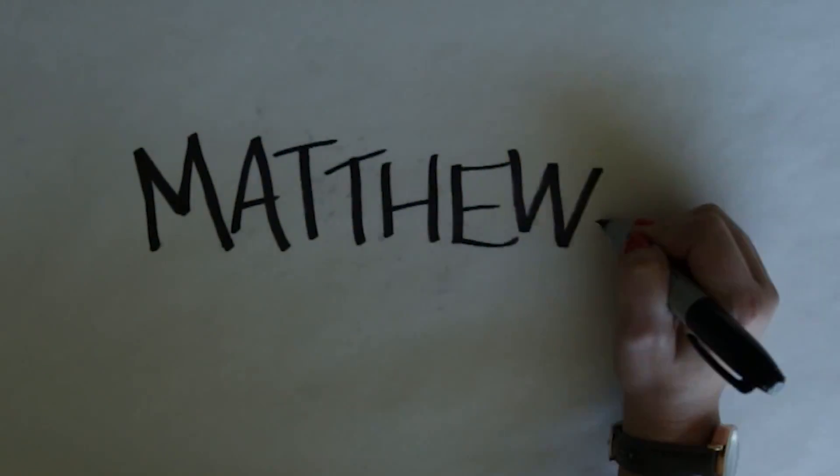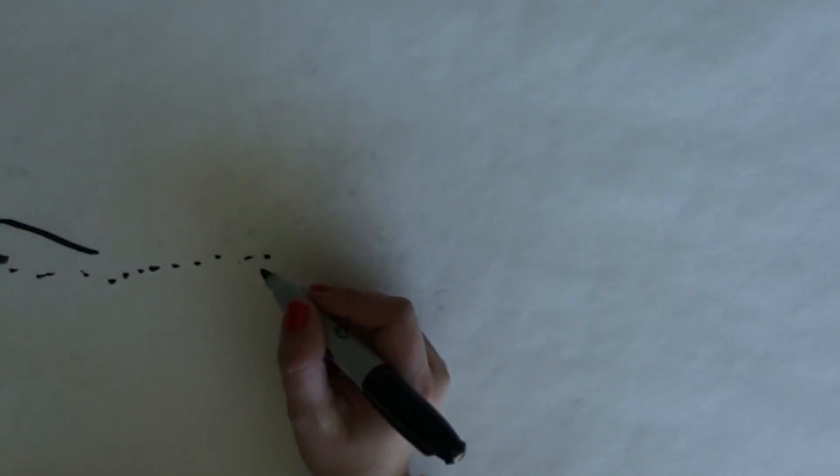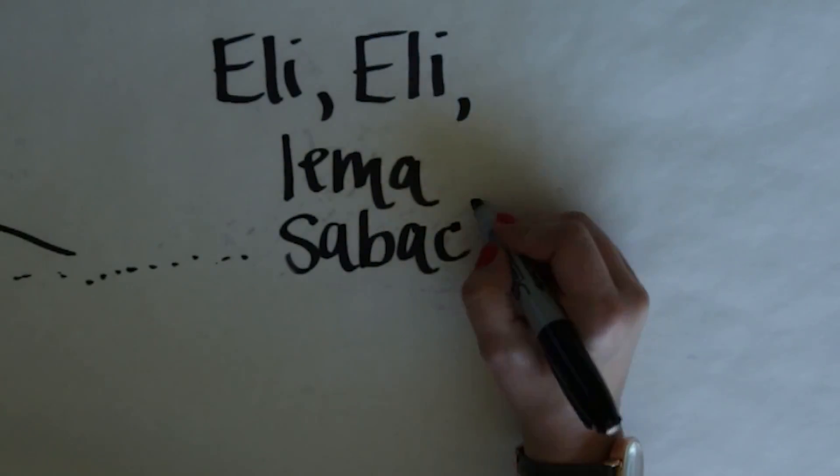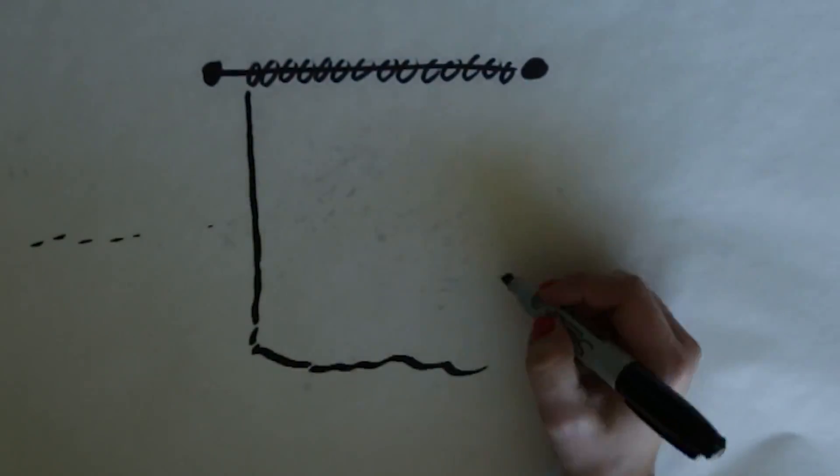In Matthew, Jesus is crucified on Calvary. His last words were recorded in Hebrew. At once the curtain tore in two from the top to the bottom.